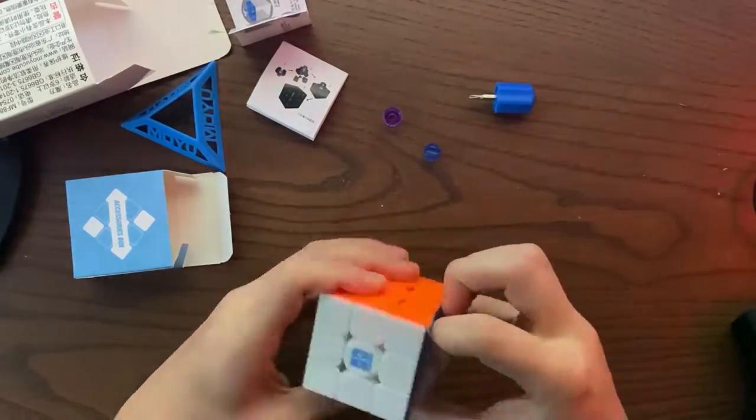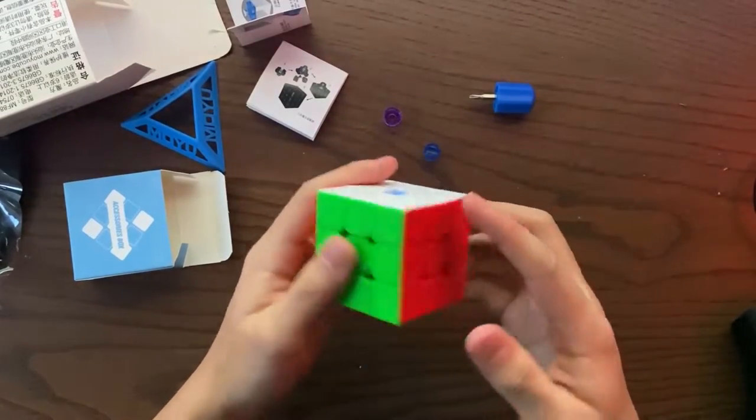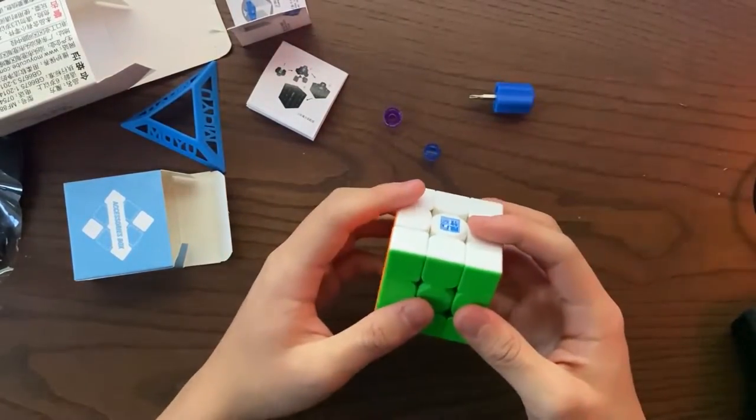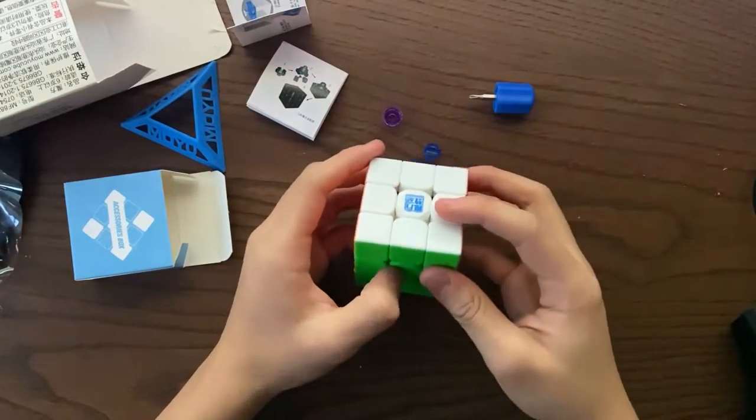So moving on to the cube. Okay, so the cube feels like it's really similar to the standard version. The color shades are the same. It is in purple internals. Let's do first turns.